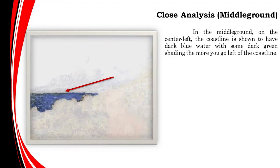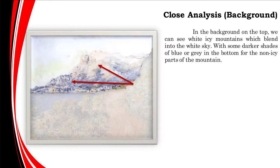In the middle ground, on the center left, the coastline is shown to have dark blue water with some dark green shading near the edges. In the background on the top, we can see white icy mountains which blend into the white sky with some darker shades of blue or grey in the bottom for the non-icy parts of the mountain.